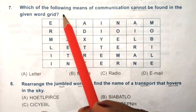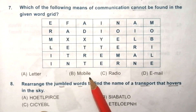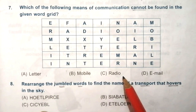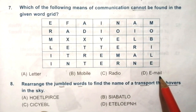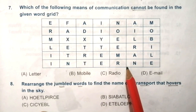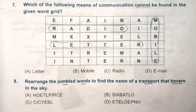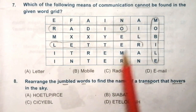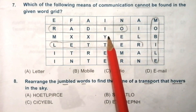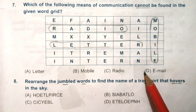Question 7: which of the following means of communication cannot be found in the given word grid? Options are: letter, mobile, radio, email. Try to find the answer from the given word grid. The answer is D — email, as email cannot be found in the word grid.